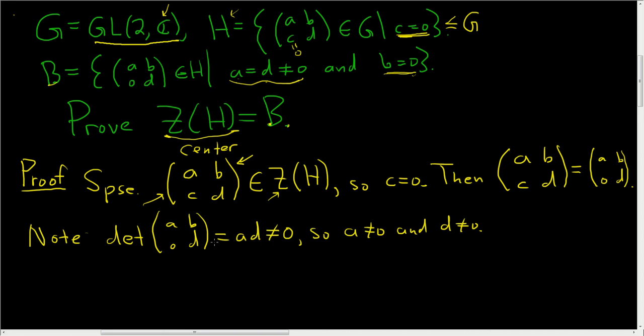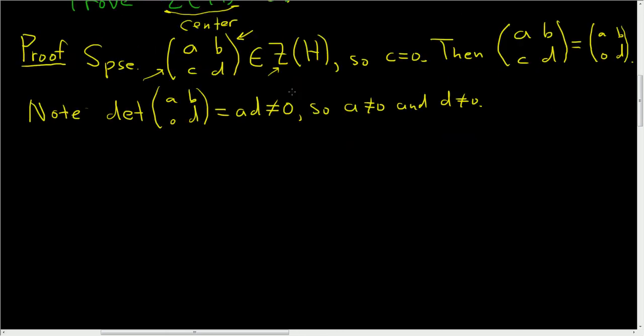Now to show it's in the center, to continue showing it's in the center, let's try to think about the simplest matrix we know that's in H. H is all the matrices where this guy here is 0. The identity matrix works, but the problem with the identity matrix is it's too simple. If you multiply the identity matrix by our matrix, you just get back our matrix. That's pretty boring.